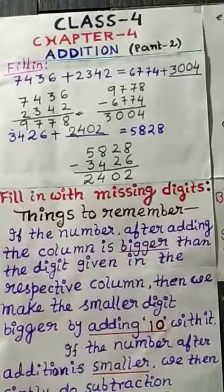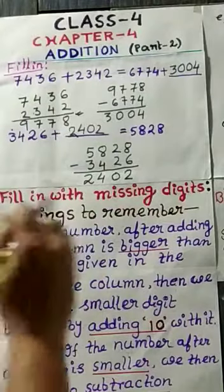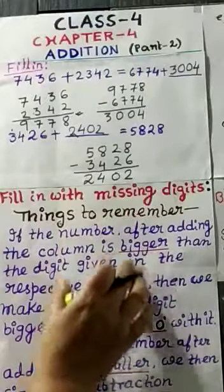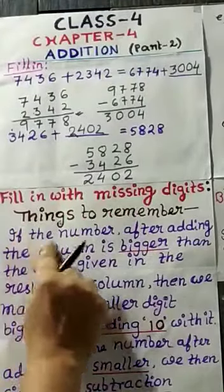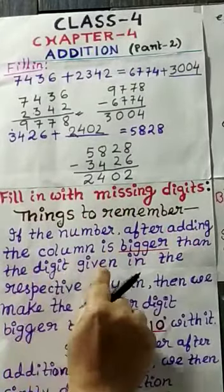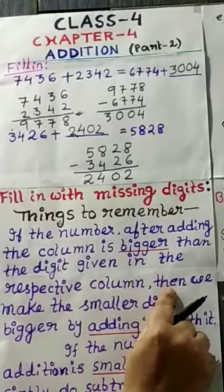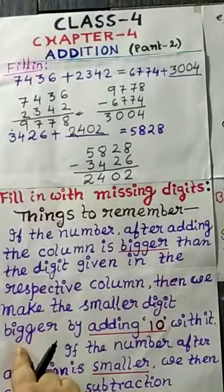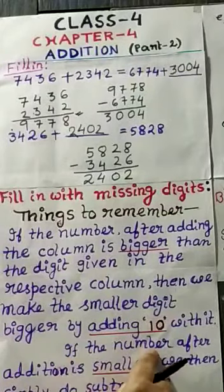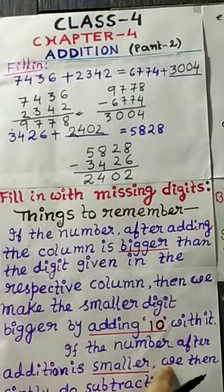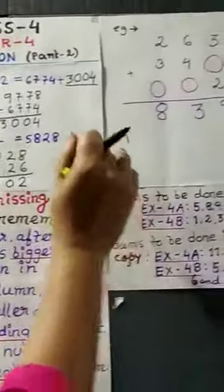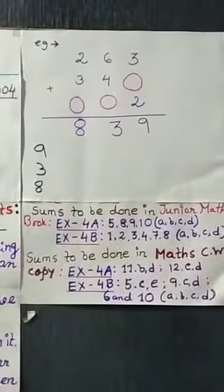Now, fill in with missing digits. How will we fill in with missing digits? To do these sums, we will have to remember, we will have to follow the formula. That is given over here. If the number after adding the column is bigger than the digit given in the respective column, then we make the smaller digit bigger by adding 10, adding 10 with it. If the number after addition is smaller, we then simply do subtraction. You will follow this process. Now, fill in with missing digits. So, we will do. We will follow this process.